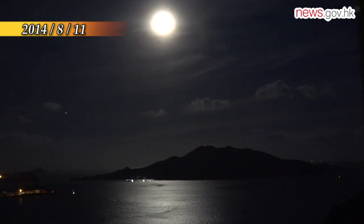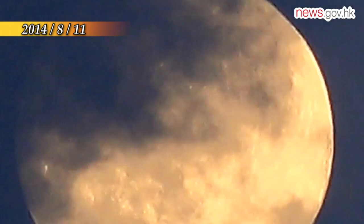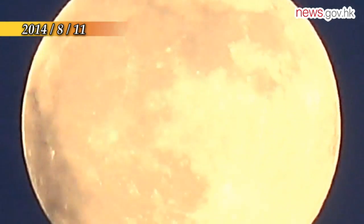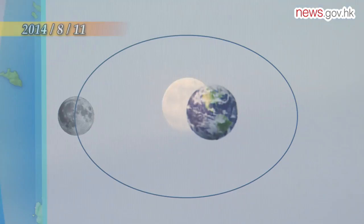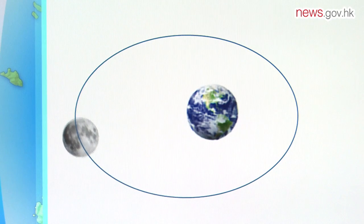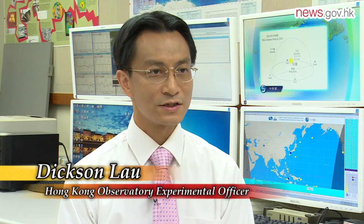For the coming mid-autumn festival, its experts say the moon we will see will be quite similar to the so-called supermoon that appeared on August 11th. The moon will still be quite close to the perigee on the mid-autumn festival day. The distance from the Earth is just about 1,000 kilometers, but slightly farther away from that on the so-called supermoon on August 11th.